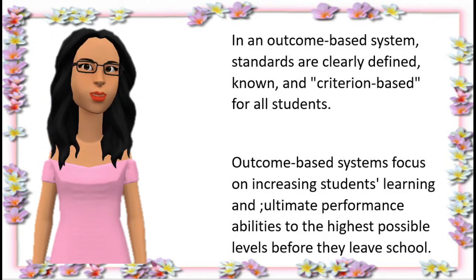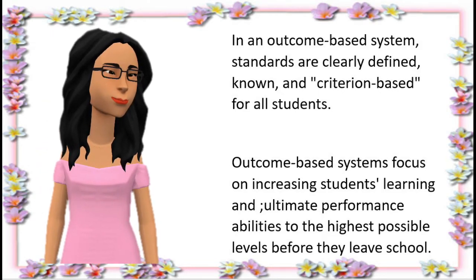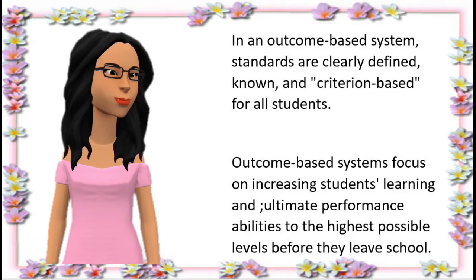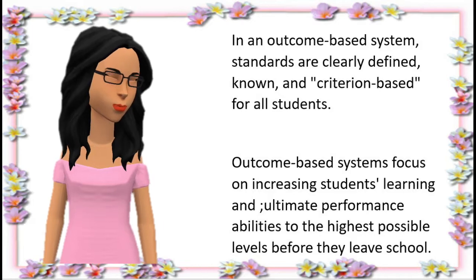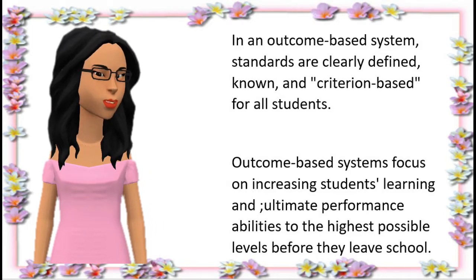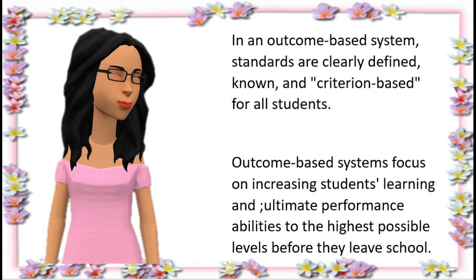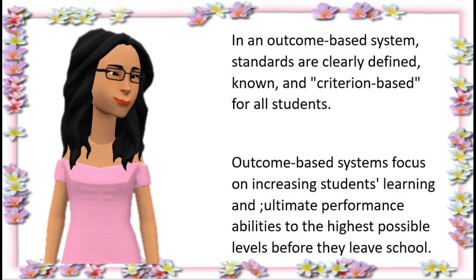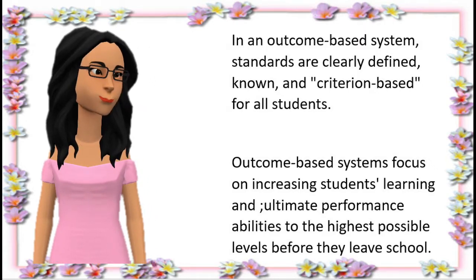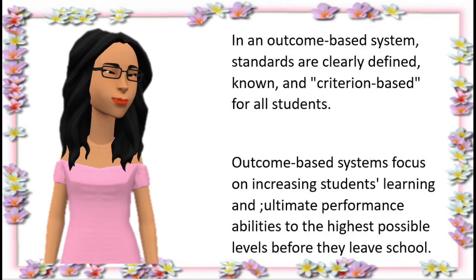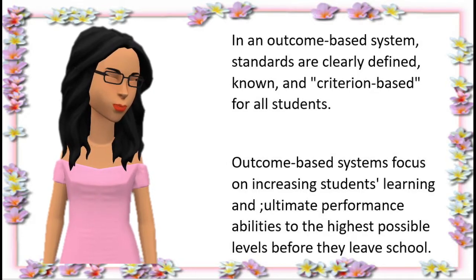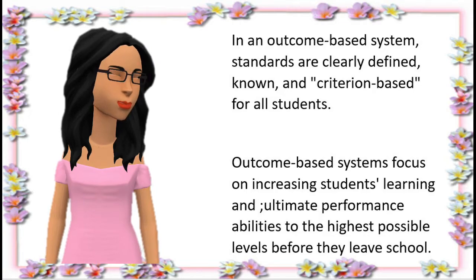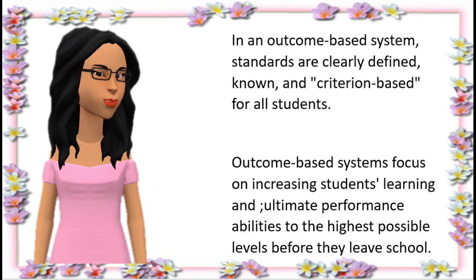Number four: outcomes-based systems focus on increasing student learning and ultimately performance abilities to the highest possible levels before students leave school. OBE schools take a macro view of student learning and achievement. Mistakes are treated as inevitable steps along the way to having students develop, internalize, and demonstrate high levels of performance capability. Working to continuously improve student learning before graduation, outcomes-based systems define student achievement as the highest level of performance a student has been able to reach at any given point in time. Ultimate school achievement is directly reflected in what students can do successfully at or after their formal instruction experiences have ended.